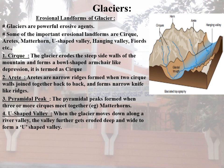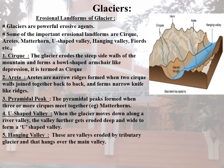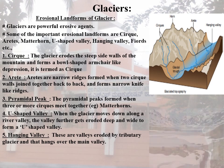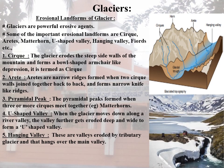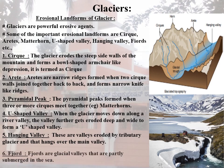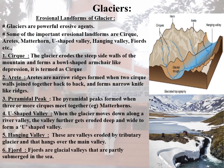The fifth one is Hanging Valley. These are valleys eroded by tributary glaciers that hang over the main valley. Finally, Fjords are glacial valleys that are partly submerged in the sea. Thank you.